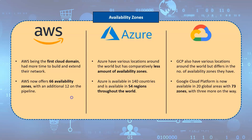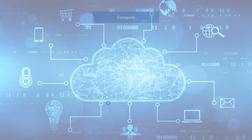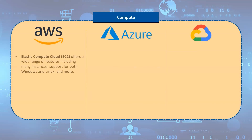Now let's move on to the next important factor: tools. Starting with compute, Elastic Compute Cloud, or EC2, is AWS's compute service, which offers a wide range of features including a large number of instances, support for both Windows and Linux, high performance computing, and more.